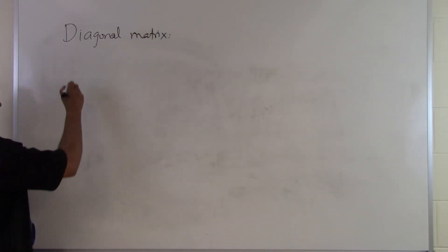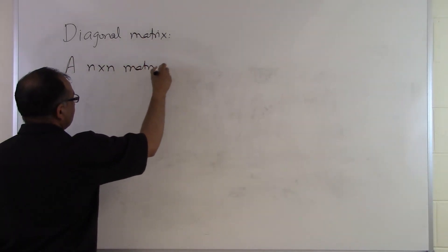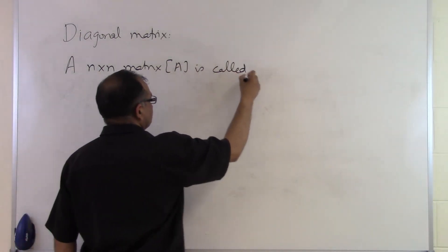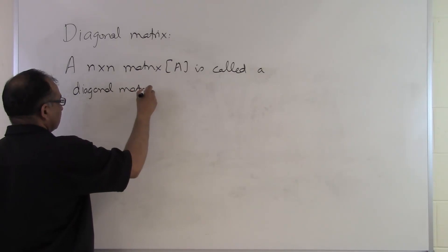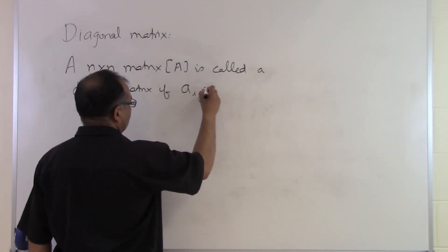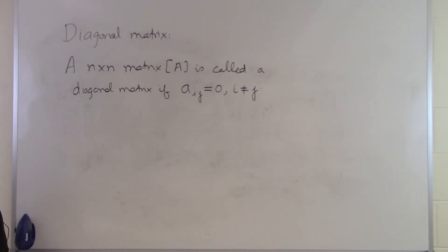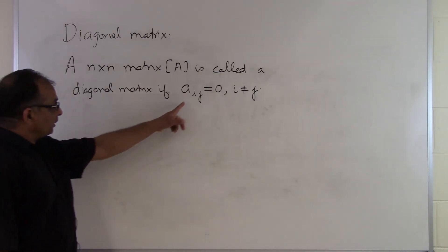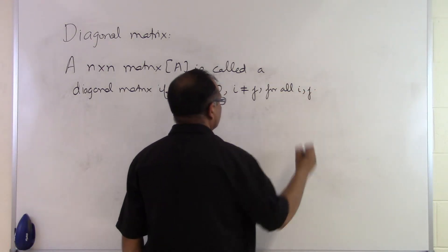Let's talk about what a diagonal matrix is. A diagonal matrix is a square matrix — an n by n matrix A is called a diagonal matrix if all the non-diagonal elements are zero. So that means Aij equals zero for i not equal to j. Anywhere the element is not on the diagonal, it has to be zero. What's happening on the diagonal has nothing to do with whether a matrix is diagonal — it's what's happening in the off-diagonal elements. Aij must be zero for i not equal to j, for all possible values of i and j.